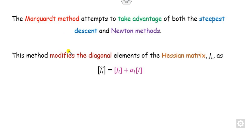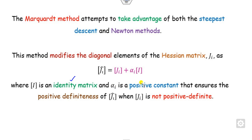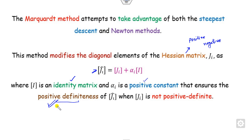This method suggests that it will modify the diagonal entries of the Hessian matrix J. If J is the Hessian matrix, you can add a scalar value alpha times I, where I is the identity matrix and alpha is a positive value. The purpose of alpha is to ensure the positive definiteness of J, since J being positive definite guarantees a minimum solution.